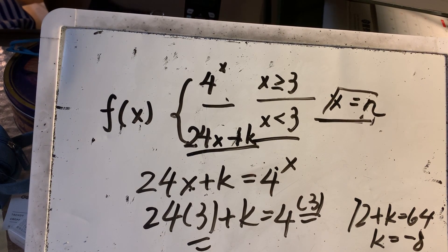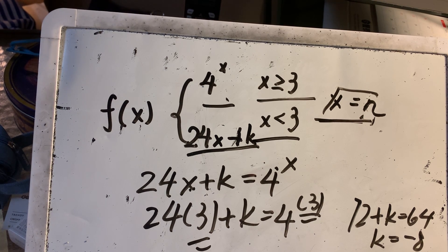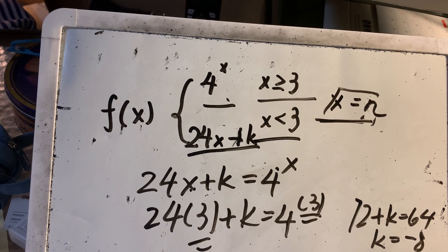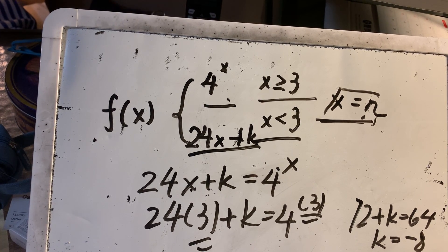So we can draw a conclusion that at k equals negative 8, f(x) is continuous. And here, we come to the end of this chapter, and I hope you have learned a lot. See you next week. Bye!